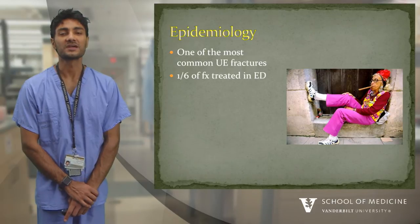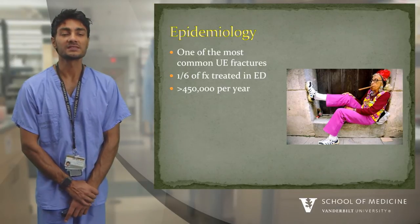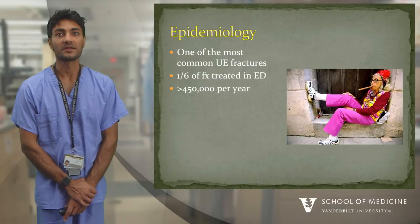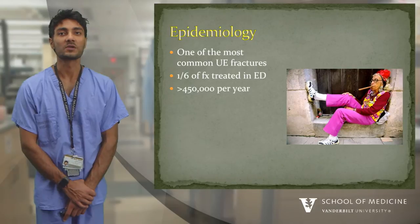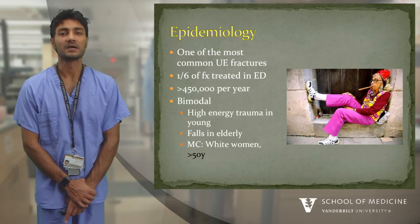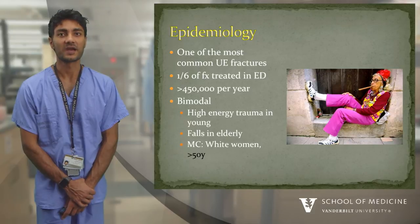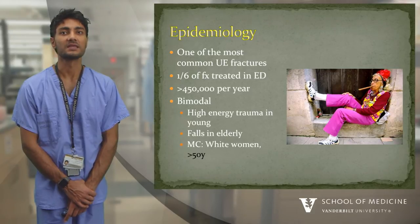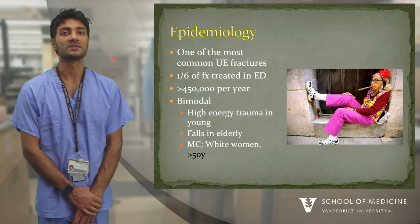Epidemiology: distal radius fractures are among the most common fractures seen by orthopedic surgeons and in the ER. Almost one out of every six ER fractures is a distal radius fracture. Rockwood and Green's latest edition reports greater than 600,000 cases per year. Like most trauma, there's a bimodal distribution — young folks sustaining this after high-energy mechanisms, and older folks sustaining it after low-energy falls.